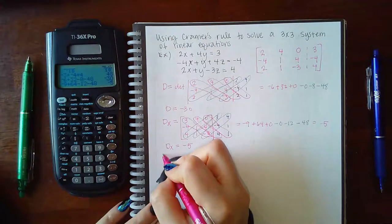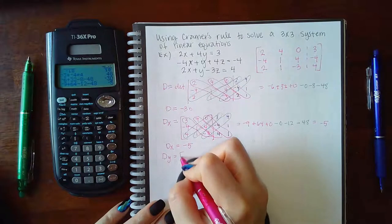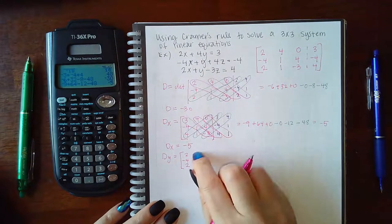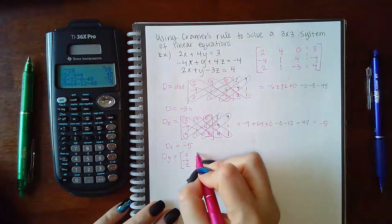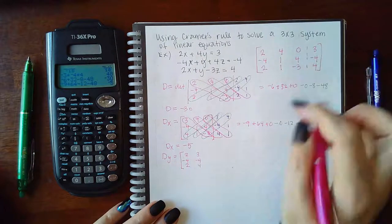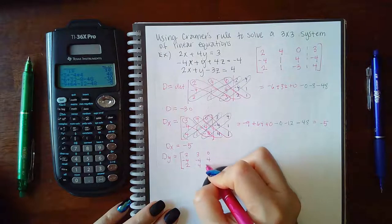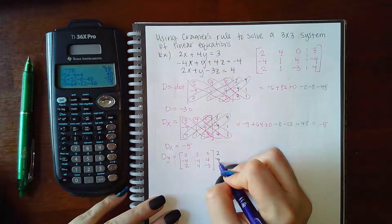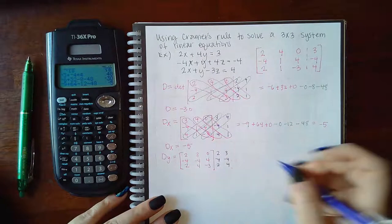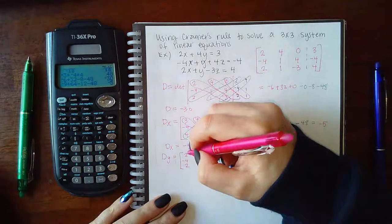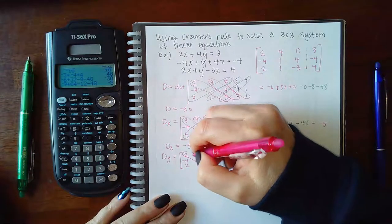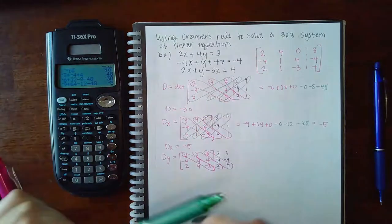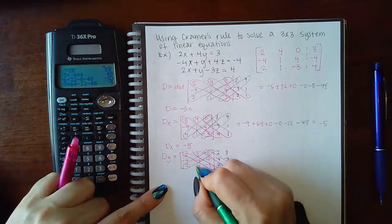Now we're going to find DY. So the X column will stay the coefficients of X. The Y column will now become the constants. And the Z column will be the coefficients of Z. And we'll rewrite the first two columns. And then we'll start our method here. So going in this direction, three of them. And then going in this direction, three.